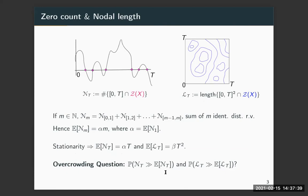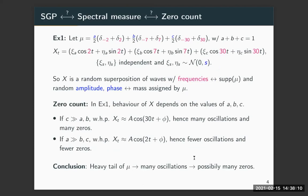So the question we are interested in is the overcrowding event: the event that the nodal count in an interval is much larger than its expected value, and an analogous question for the nodal length as well. We next want to understand the role played by the spectral measure in the zero count — specifically, which features of the spectral measure influence the zero count and in what ways.